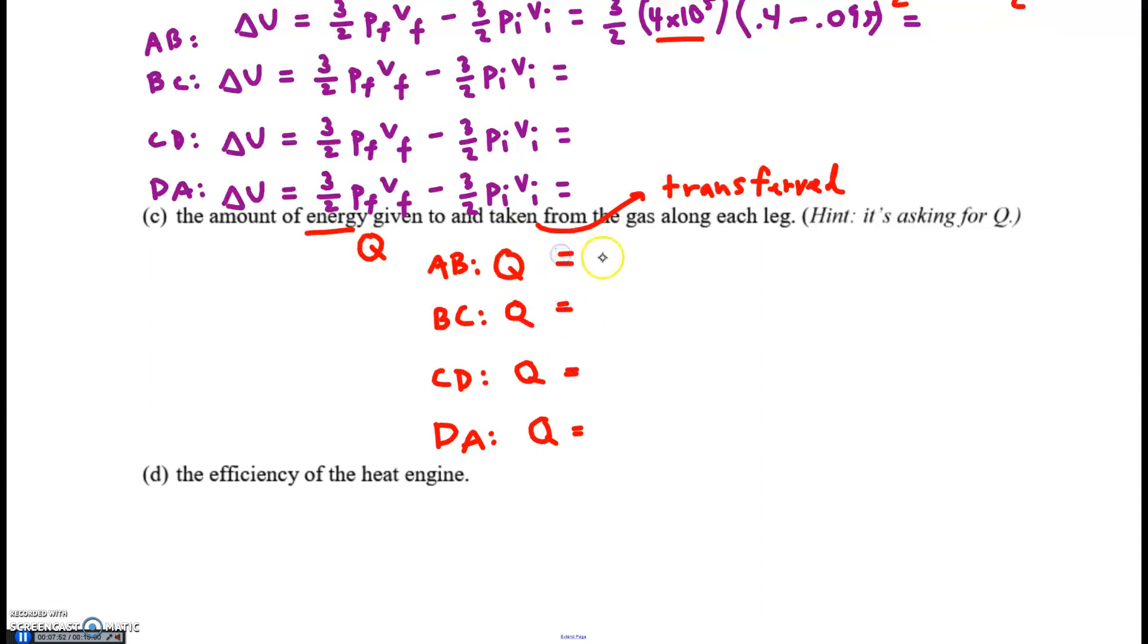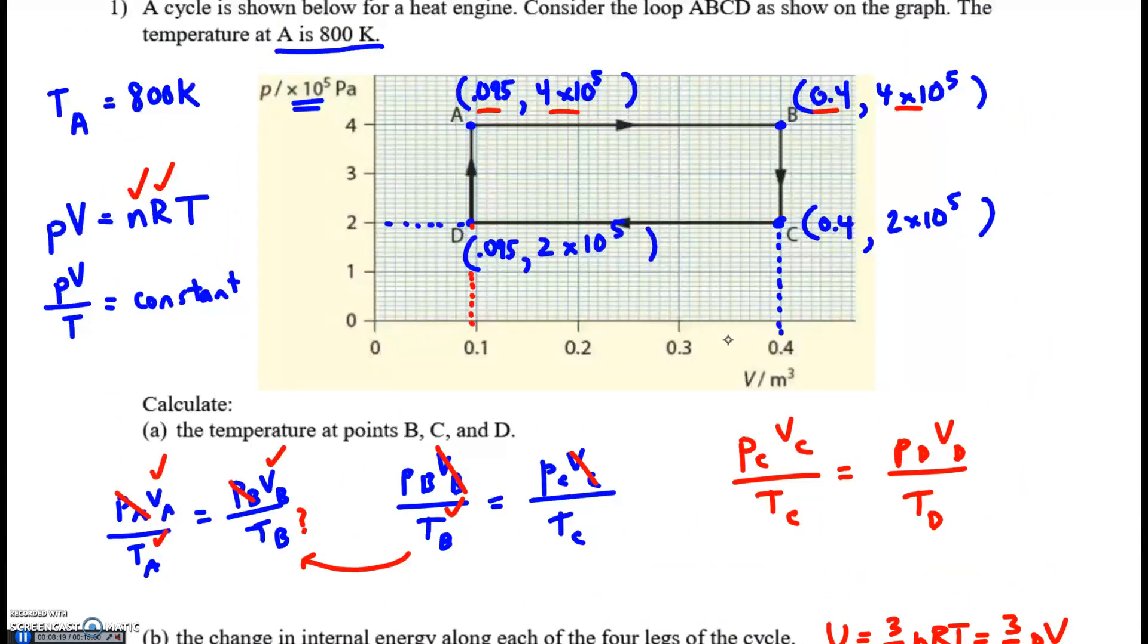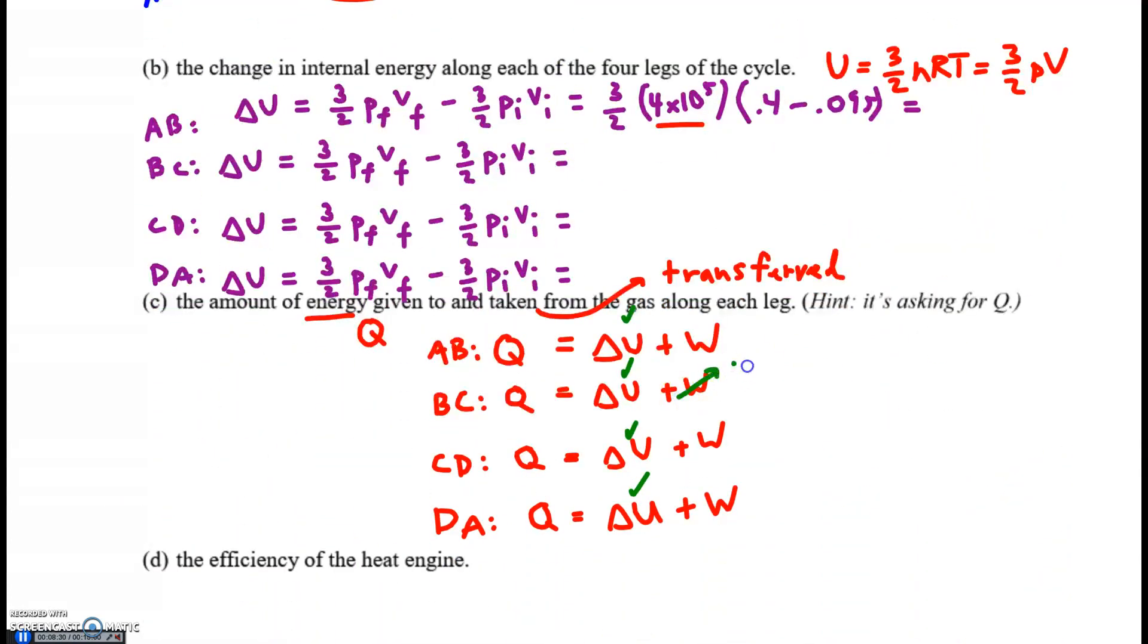In each case, we apply the first law of thermodynamics: Q = delta U + W. This is pretty straightforward. We know delta U for each one, so that's easy. Half the work is done. If we look, from B to C the volume did not change. From A to D the volume did not change. So BC, no work is done. DA, no work is done. The work is the pressure times the change in volume. If you don't change volume, no work is done.